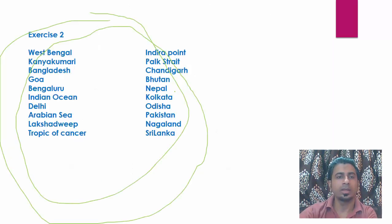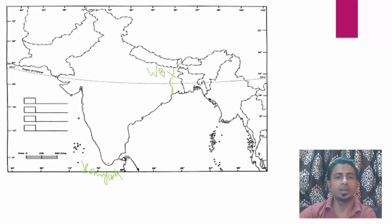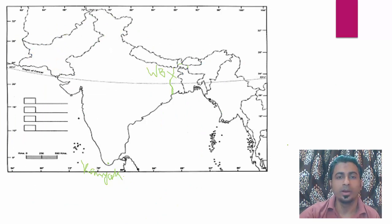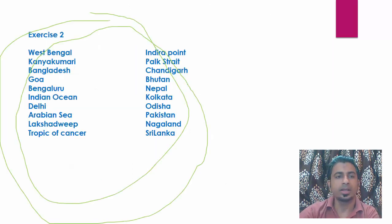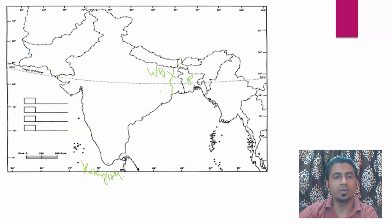Next item is Bangladesh. Bangladesh we all know where it is — it is our eastern neighbor. It is bounded by northeast India on its east and India on its west. This is Bangladesh.